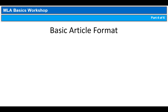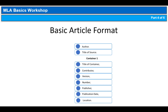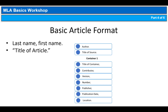We'll keep a copy of the flowchart handy as we review the container 1 information. The citation starts with the author. You'll use the same format as you did with books: last name, comma, first name, period. Next comes the title of the article. Notice that the title appears in quotation marks. Use capital letters like you would for any title, and make sure that the period is inside the quotation marks.